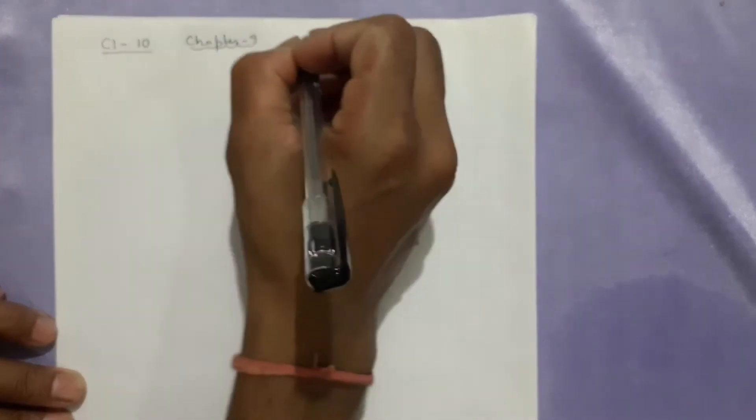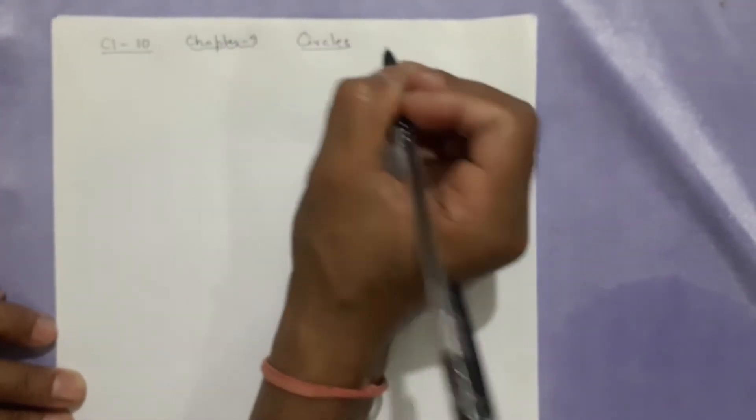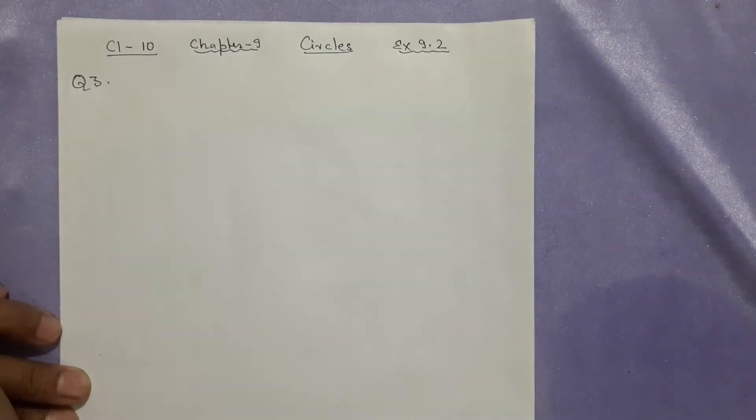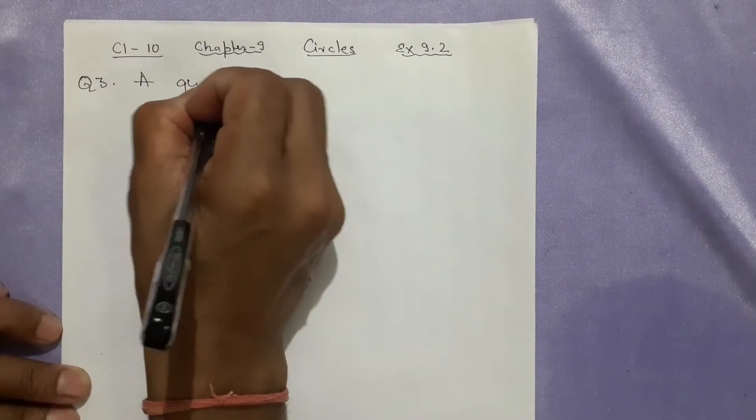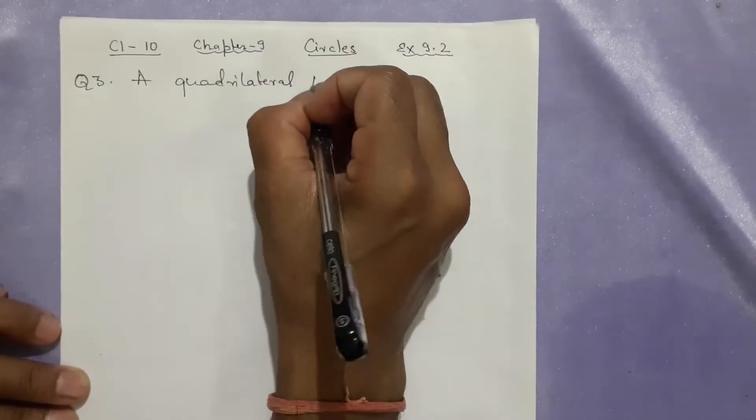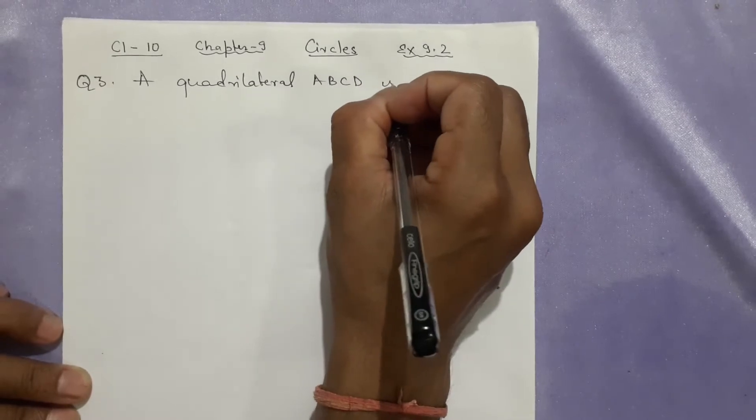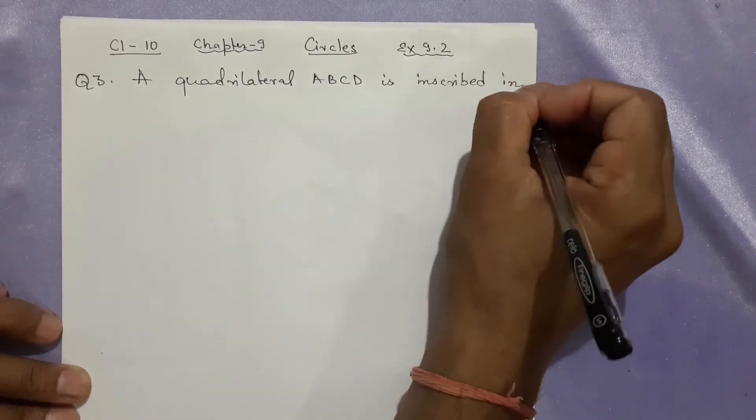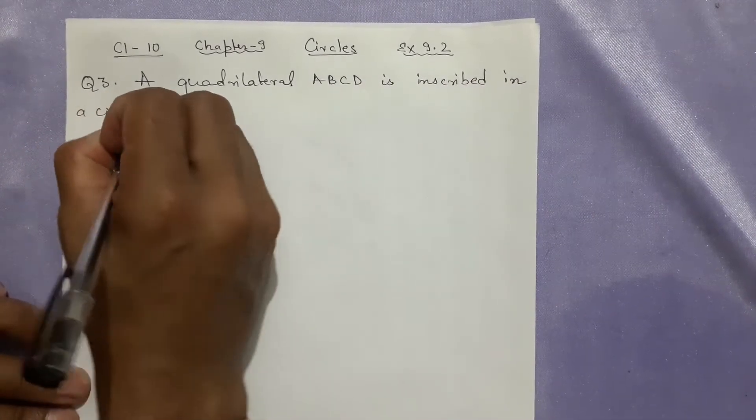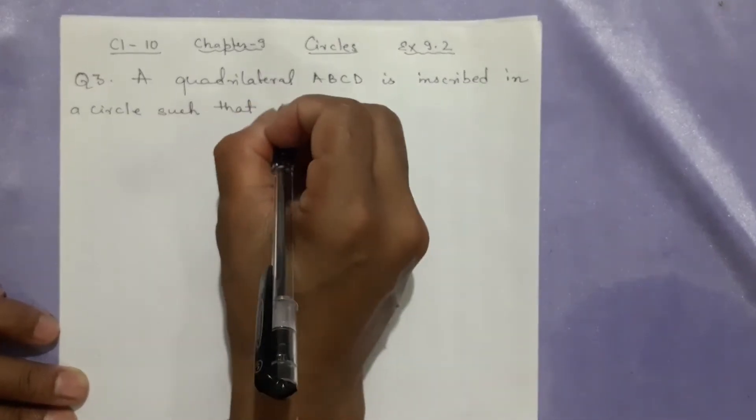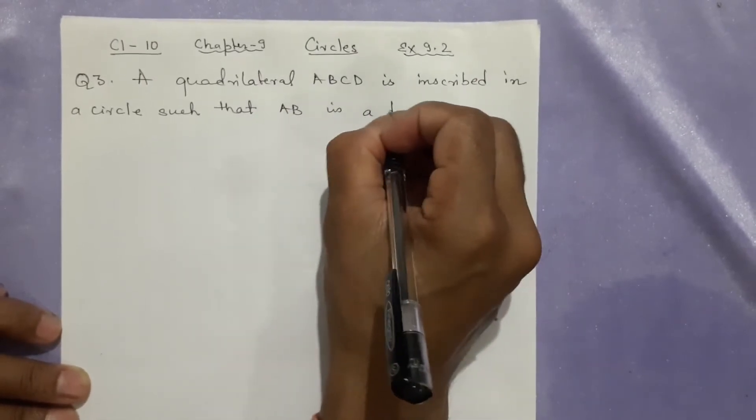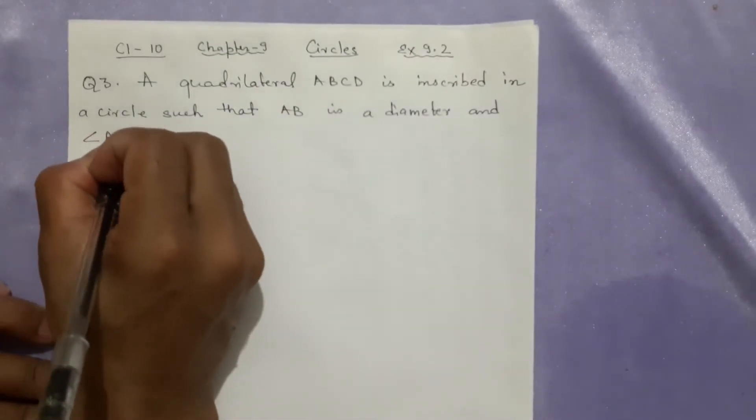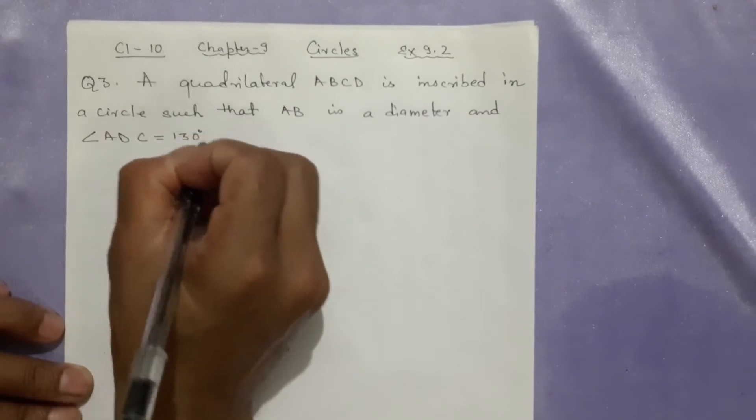Chapter 9, Circles. Exercise 9.2, Question 3. The question is: A quadrilateral ABCD is inscribed in a circle such that AB is a diameter and angle ADC = 130°. Find angle BAC.